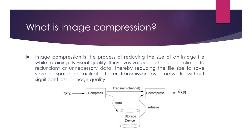This paper explores the intricate landscape of image compression, focusing on two fundamental techniques: lossless compression, exemplified by Huffman coding, and lossy compression with a spotlight on block truncation coding. Through a detailed examination of these techniques, we aim to provide insights into their mechanisms, applications, and trade-offs, contributing to a deeper understanding of image compression.